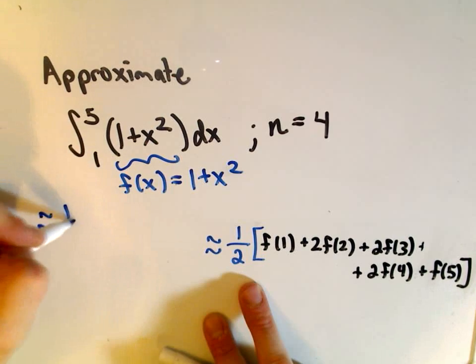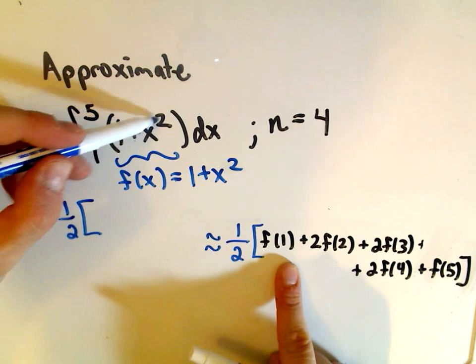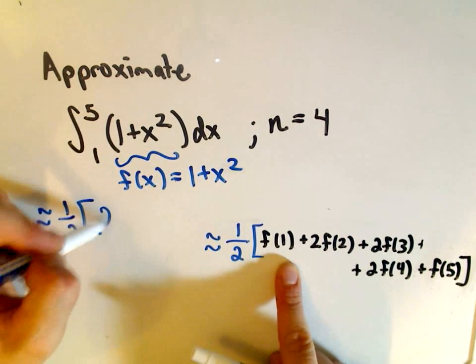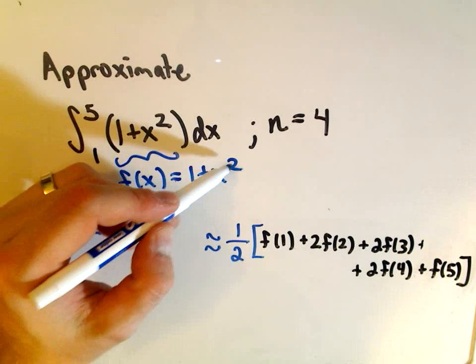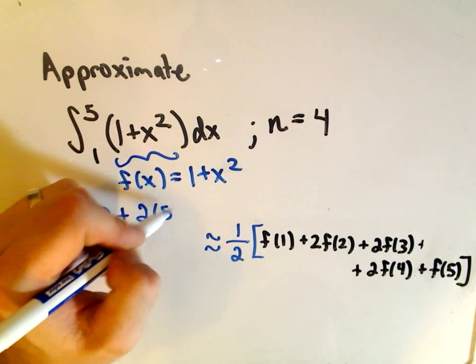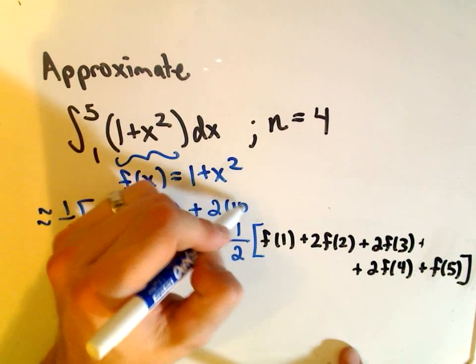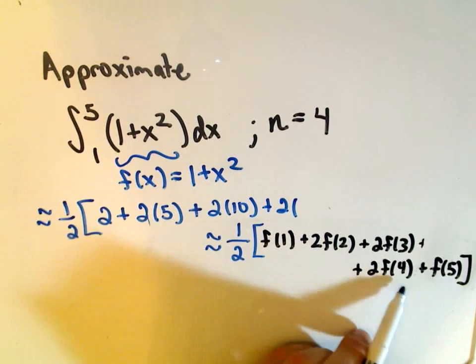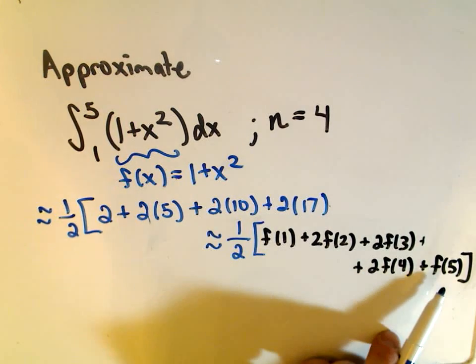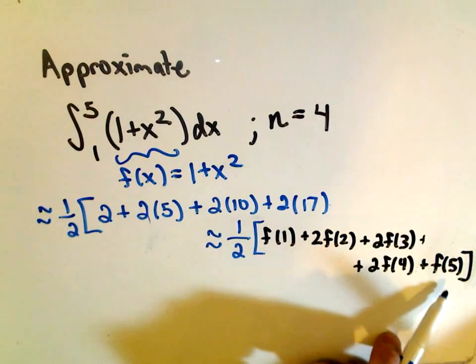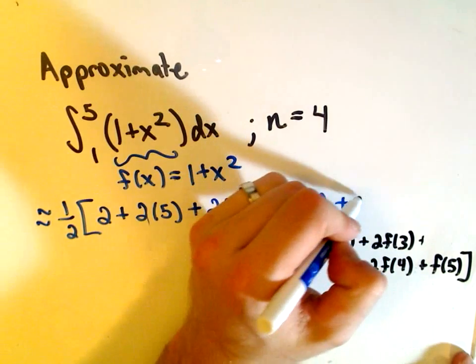So it says this integral is going to be roughly equal to 1 half. When we plug 1 into our function, we'll get 1 plus 1 squared. 1 squared is 1, so we'll get 1 plus 1 or 2. Then it says we get twice the value when we plug in 2. Notice if we plug in 2, 2 squared is 4, 4 plus 1 is 5. So we've got to double that value. When we plug in 3, 3 squared is 9 plus 1 is 10. Again, we have to double that value. f of 4, when we plug 4 in, 4 squared is 16 plus 1 or 17. And notice the last point, f of 5, that doesn't have a 2 in front of it. When we plug 5 in, 5 squared is 25 plus 1, so 26.